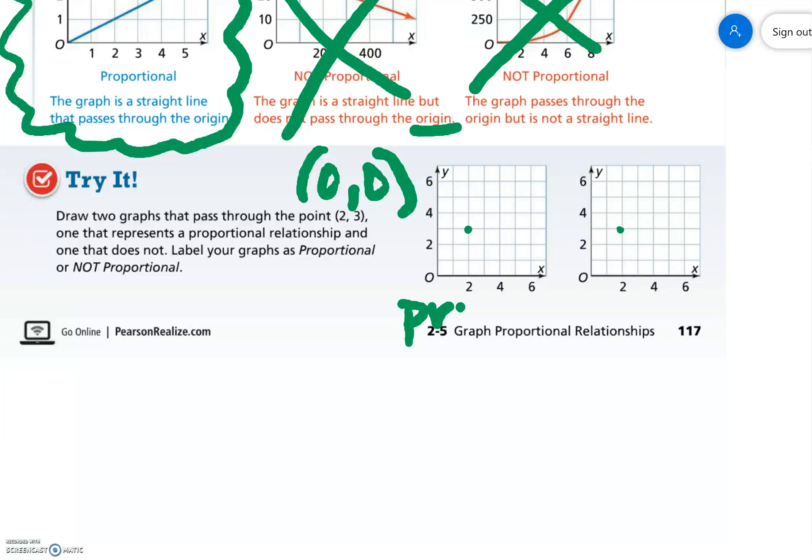Okay, the first one I'm going to do is proportional. So I know it's got to be straight and I know it's got to go through that point (0,0). So I'm going to draw a straight line.